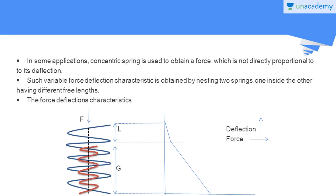In some applications, concentric springs are used to obtain a force which is not directly proportional to its deflection. Such variable force-deflection characteristics are obtained by nesting two springs, one inside the other, having different free lengths. The force-deflection characteristics for this type of concentric spring are shown in the figure. Here, the free length of the outer spring is greater than the free length of the inner spring, so when a force is applied, the force is not directly proportional to the deflection.